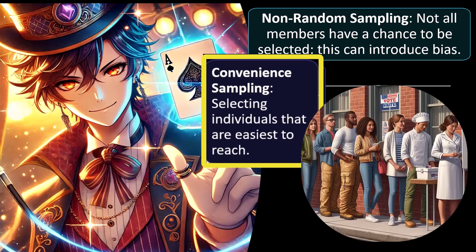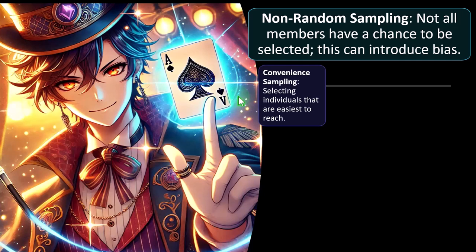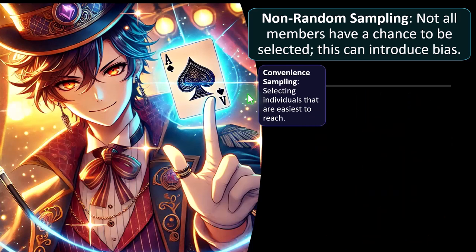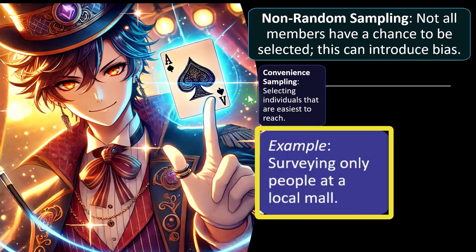Convenience sampling means selecting individuals that are easiest to reach. In a voting survey, you can't reach everybody in the country. It used to be that you'd call people, but now most people don't have landlines. Door-to-door is also difficult, and you can only talk to people who actually want to talk to you. All of those factors bias the sample — the fact that you can't reach someone doesn't mean they're not going to vote. Example: surveying only people at a local mall.